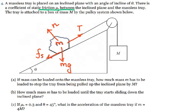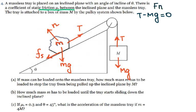For the hanging block, we have tension, and it's the same rope so it's the same tension. The force of gravity acting on it is Mg, and there is no acceleration. Because there is no acceleration, the net force equals zero. So I have tension minus Mg equals zero, which comes from Newton's second law F = ma with acceleration equal to zero. That gives us T equals Mg.